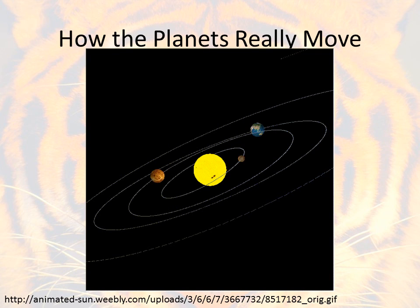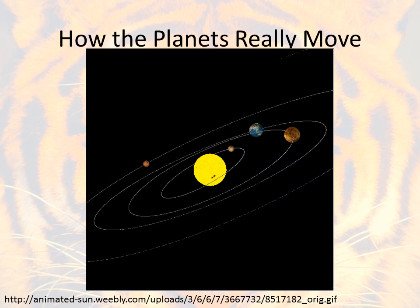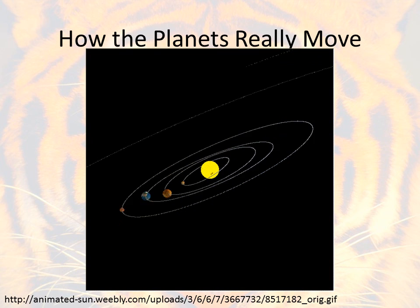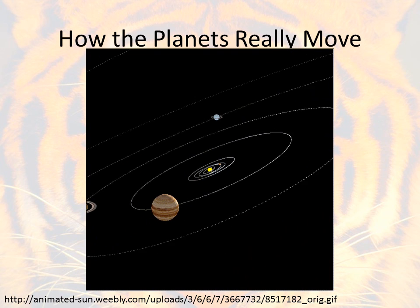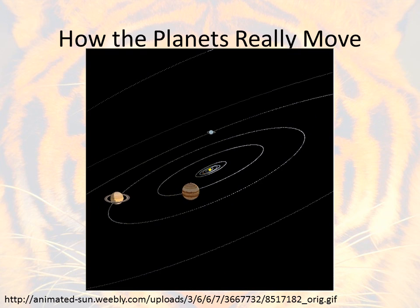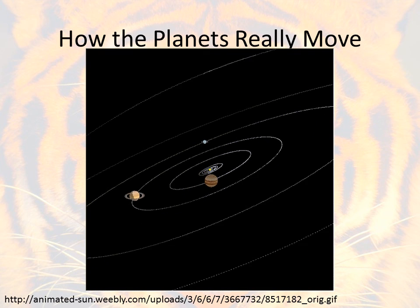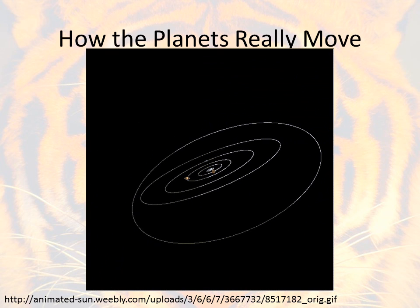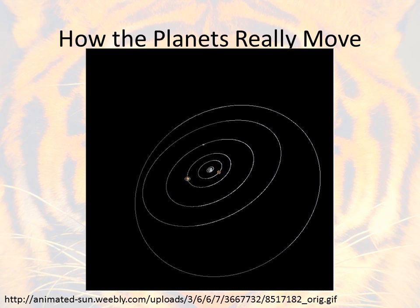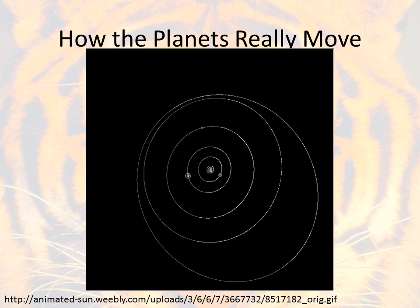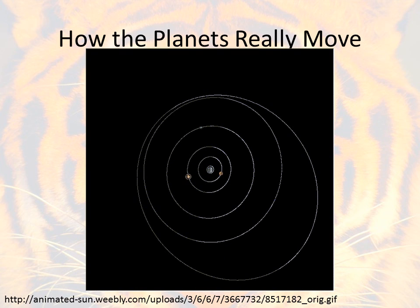So this is a good diagram for how the planets really move. I want you to draw something like this in your notes. You don't have to have everything in motion, but get the sun in the center, and then show some planets traveling around the sun — that's really what we want to notice. Go ahead and pause this video to work on a diagram if you need to, or click backwards to watch this animation play over again.